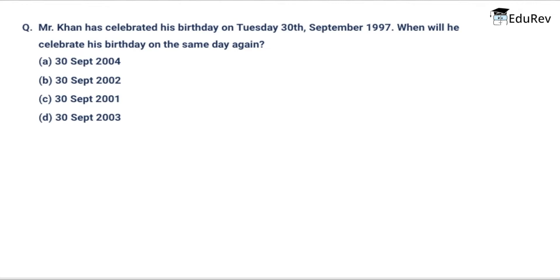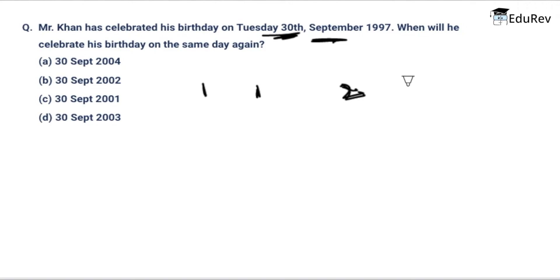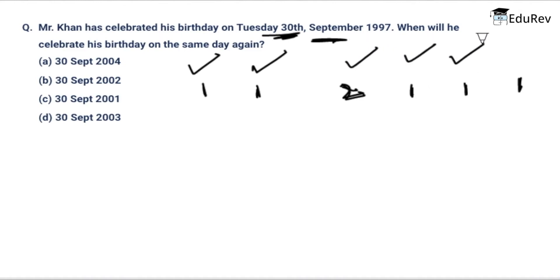The next question states that Mr. Khan celebrated his birthday on Tuesday, the 30th of September 1997. When will he celebrate his birthday on the same day again? The same day repeats after every 7 odd days. 1997 is an ordinary year (1 odd day), 1998 gives 1, 1999 gives 1, 2000 gives 2, 2001 gives 1, 2002 gives 1, and 2003 gives 1. The total is 7. Thus on 30th September 2003, Mr. Khan will celebrate his birthday again on Tuesday — option D.